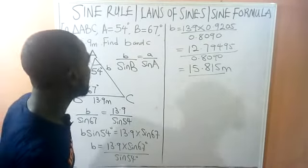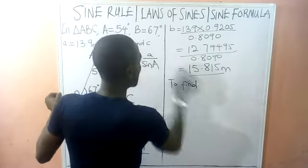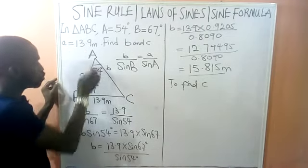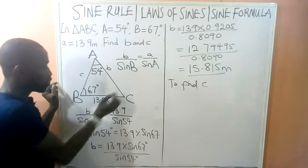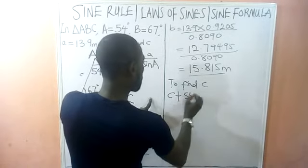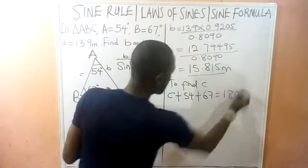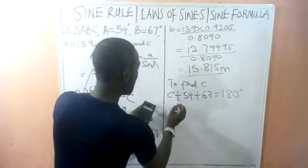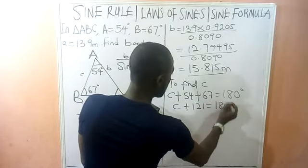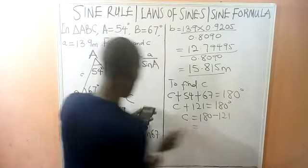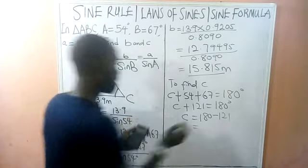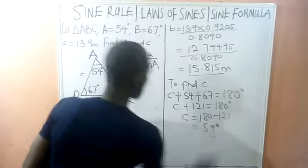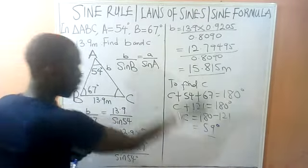Now we need to find side c, but first we need angle C. In a triangle, the sum of angles is 180°. So: angle C + 54° + 67° = 180°. That gives us 54 + 67 = 121, so angle C = 180° − 121° = 59°. So our angle C equals 59 degrees.